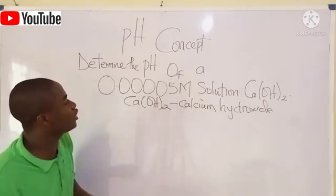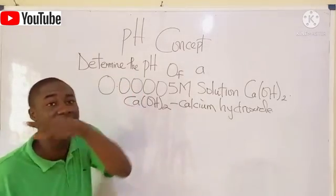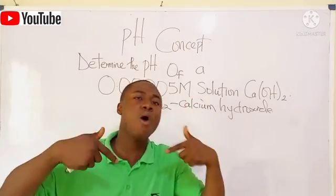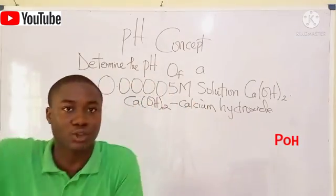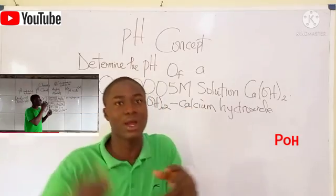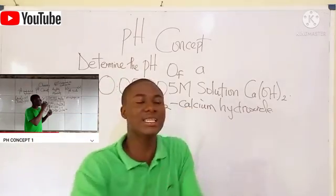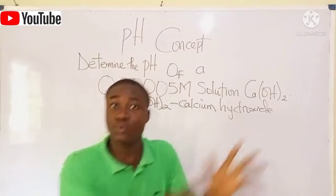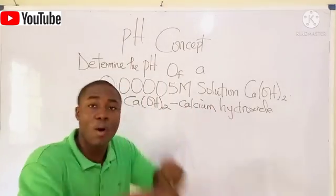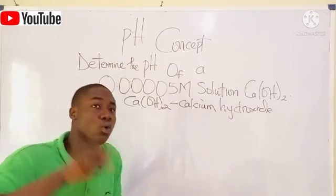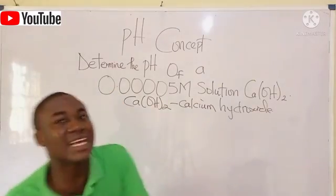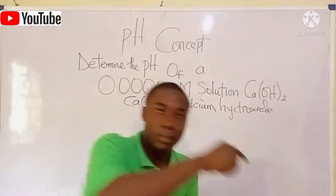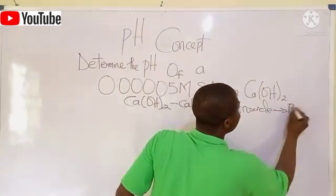Now, since the question says determine pH, but the compound is a base, what we are to determine is the pOH. Remember, in my previous video, I said pH is associated with acid, whereby pOH is associated with base. So, since this compound is a base, we are to look for pOH instead of pH. After getting the pOH, we then convert the value to the pH.